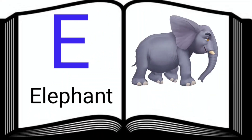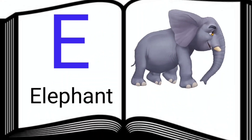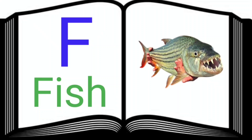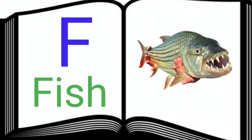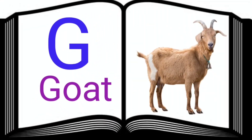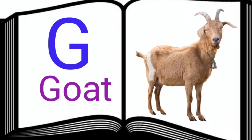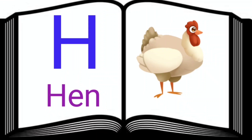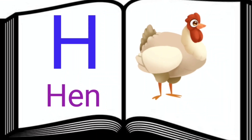E. E for elephant. F. F for fish. G. G for goat. H. H for hen.